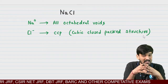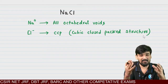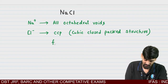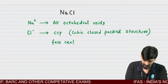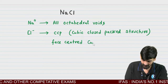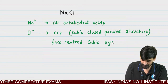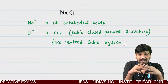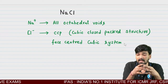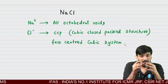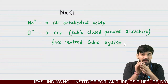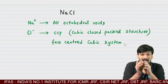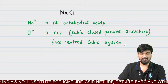Na+ undergoes all octahedral voids, and Cl- undergoes CCP which is cubic close-packed structure, also known as FCC — face-centered cubic system. In the face-centered cubic system, all chlorine negative atoms occupy the corner positions as well as all face-center positions in a cube.